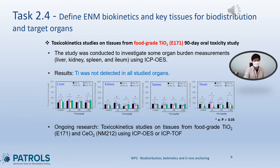We are also participating in Task 2.4, Defined Engineered Nanomaterials Biokinetics and Key Tissues for Biodistribution and Target Organs. We conducted a toxicokinetics study on tissues from food grade titanium dioxide E171 from a 90-day oral toxicity study using ICP-OES. As a result, titanium was not detected in liver, kidneys, spleen, and ileum — all of the studied organs. The same samples are being analyzed using ICP-TOF for reproducibility and accuracy. In addition, we are investigating organ burden in silicon dioxide-treated samples.